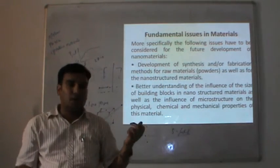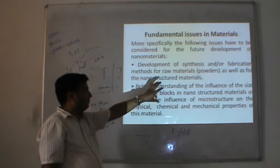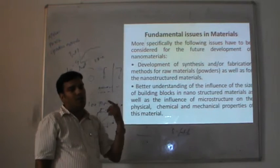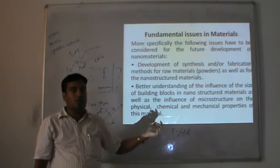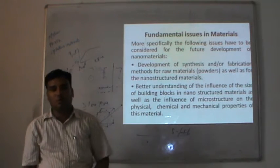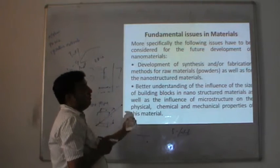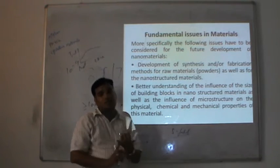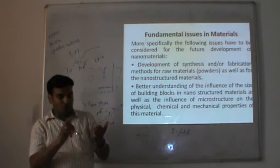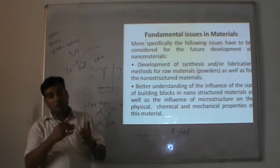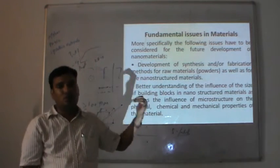These are the important things required to understand and develop. We need to understand how nanostructures behave and how nanostructures are affected by the microstructure. It is important to provide nanostructures of desired size, desired chemical composition, and desired uniform size distribution — these are the important things which are required to be understood and developed.